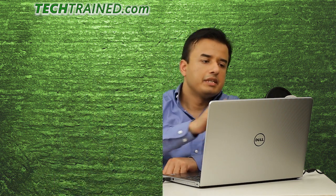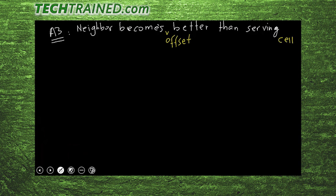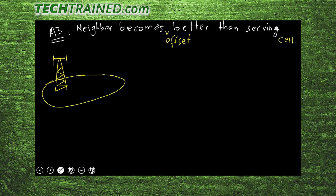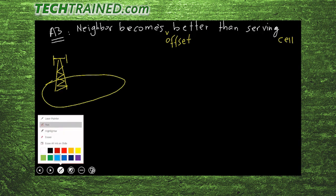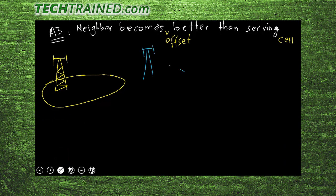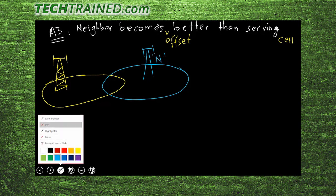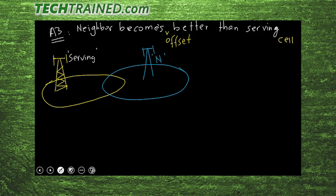I'm going to give you an example of two intra-LTE frequency cells, elaborating on Event A3. The definition of the event is written on the screen. Let's say this is cell A — the serving cell S — and there is a neighboring cell N. Both cells belong to the same frequency, so let's label F1 on both of them.